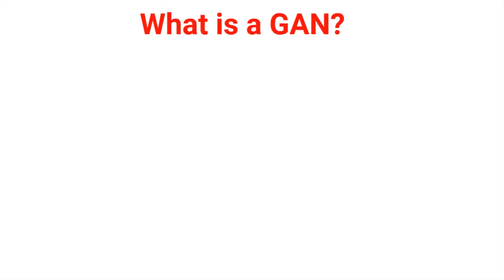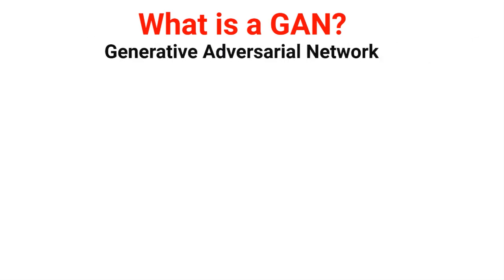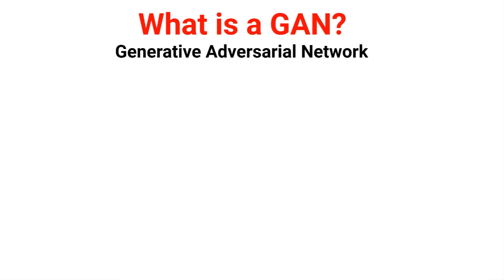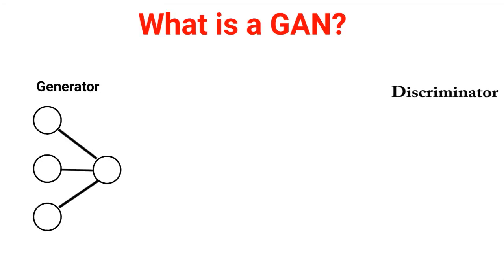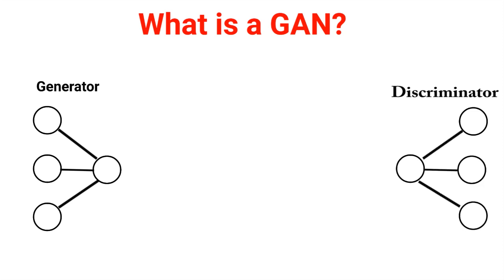So what is a GAN? GAN stands for Generative Adversarial Network, and it's basically an architecture where there are two competing neural networks — a generator on one side and a discriminator on the other. Let's go ahead and draw two neural networks on the screen: our generator and our discriminator.